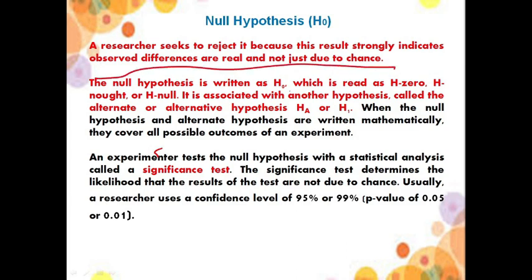Null hypothesis is represented by H0, and it is associated with another hypothesis which we call alternate hypothesis, represented by HA or H1. When the null and alternate hypothesis are written, we can mathematically discover all the possible outcomes of an experiment. An experiment tests the null hypothesis using a statistical analysis called a significance test.